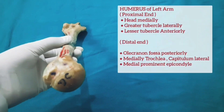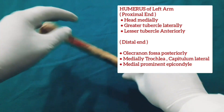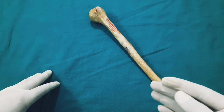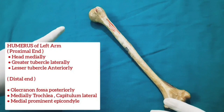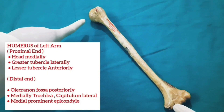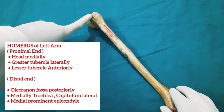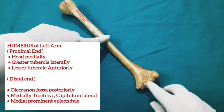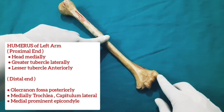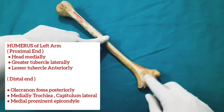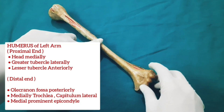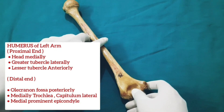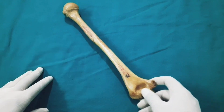This is the humerus of the left arm. Placed in anatomical position, as if someone is facing you with their left arm, the head of the humerus is medial, the greater tubercle is lateral, and the lesser tubercle is anterior. Distally, the trochlea is medial, the capitulum is lateral. The medial epicondyle is more prominent, and the lateral epicondyle is smaller. Anteriorly we have the coronoid fossa and radial fossa, and posteriorly the olecranon fossa. This is the side determination of the humerus bone.